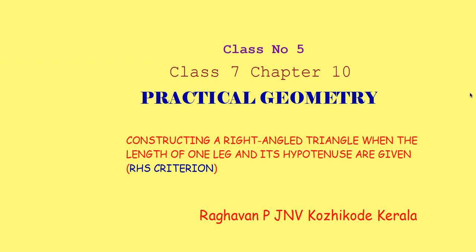Hi to all, welcome to my fifth class on practical geometry, class 7, chapter 10. In this class I am going to discuss constructing a right-angled triangle when the length of one leg and its hypotenuse are given, i.e. RHS criterion.